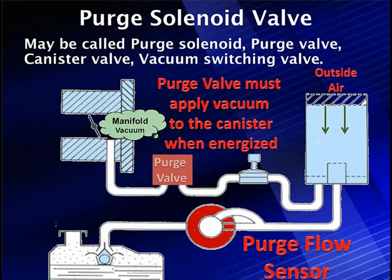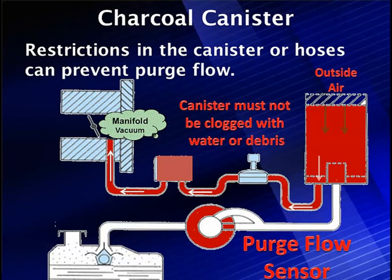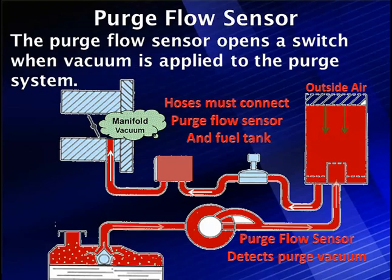We're going to talk about the conditions when we would do this and talk about the codes we're getting. For canister operation, restrictions in the canister or hoses can prevent normal flow, which might give us a code for low flow. The canister could be clogged because it's full of water or debris. We see this occasionally in flood situations where the canister has been underwater and is fully saturated with water — it's very hard to pull vapor through. You may even get misfire codes sometimes, so don't ignore that.